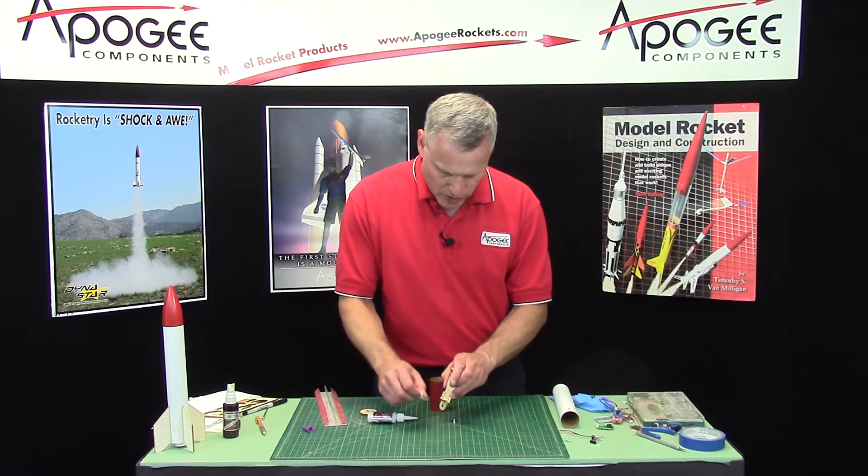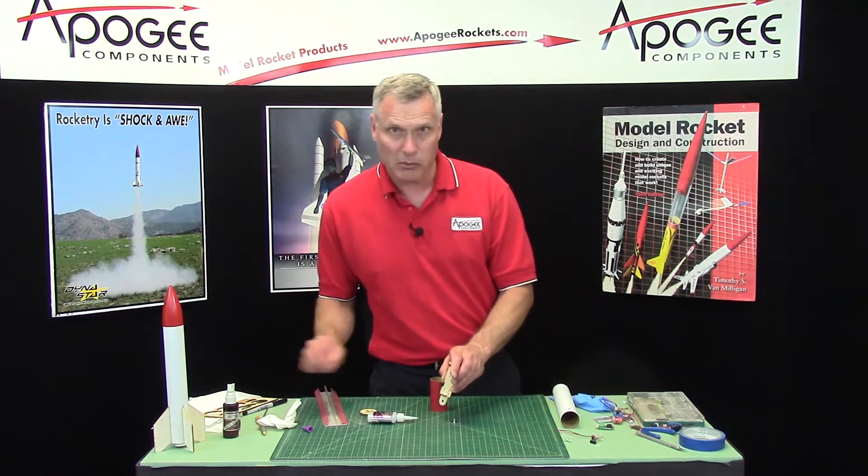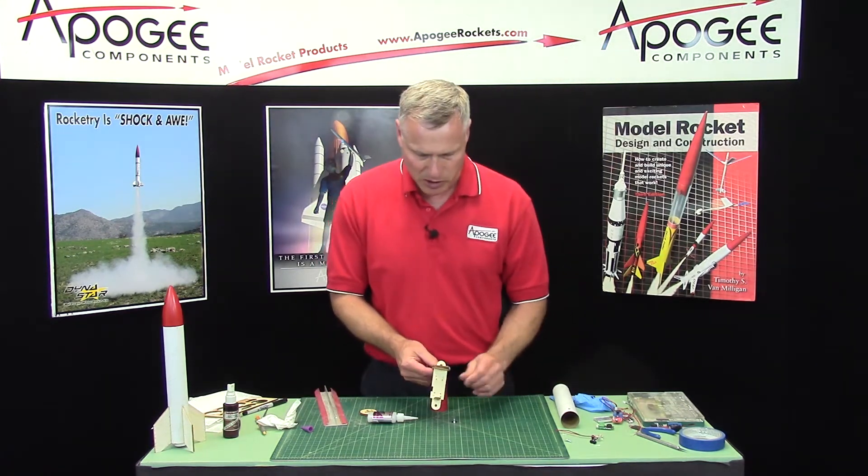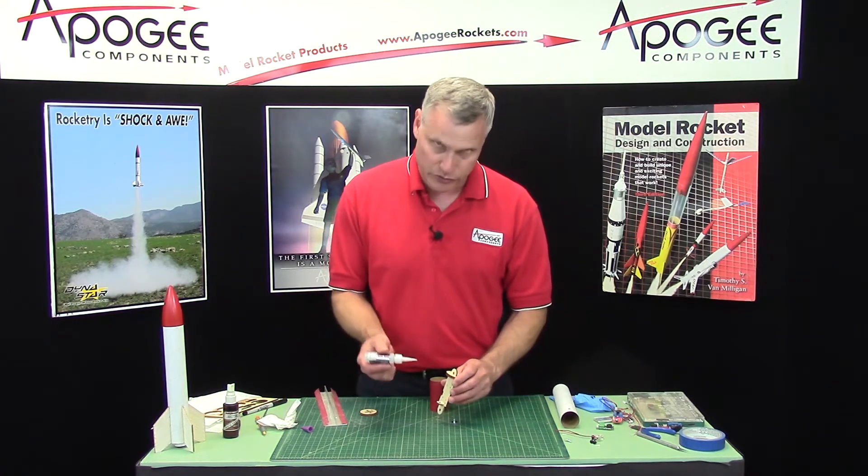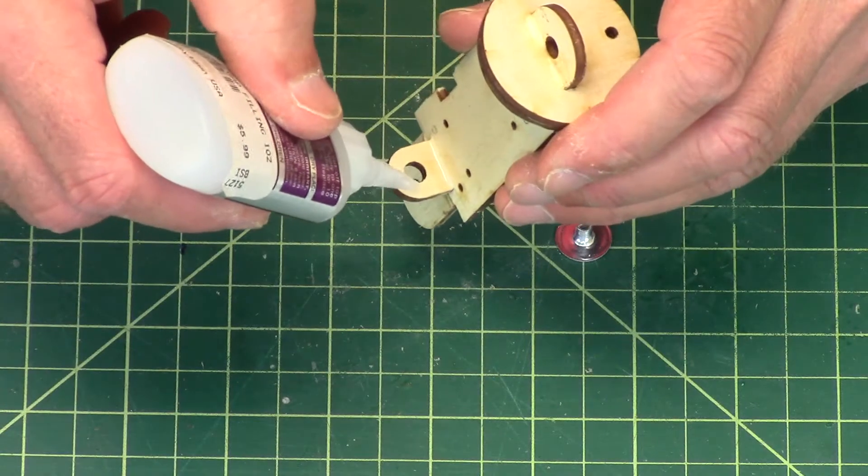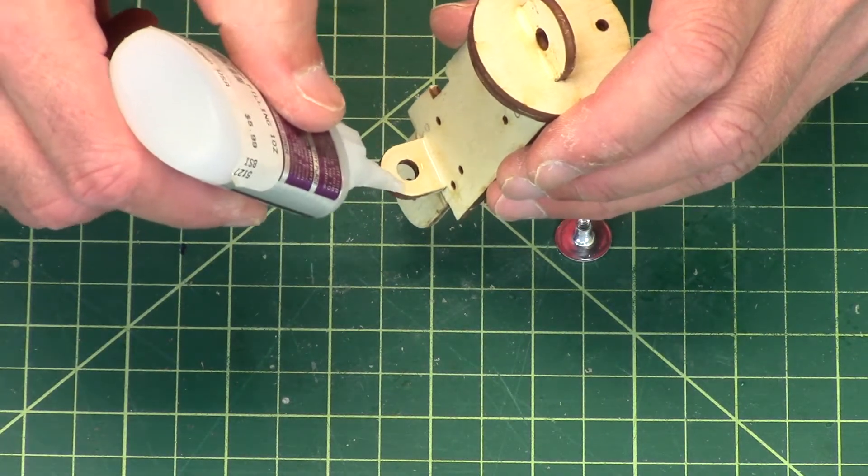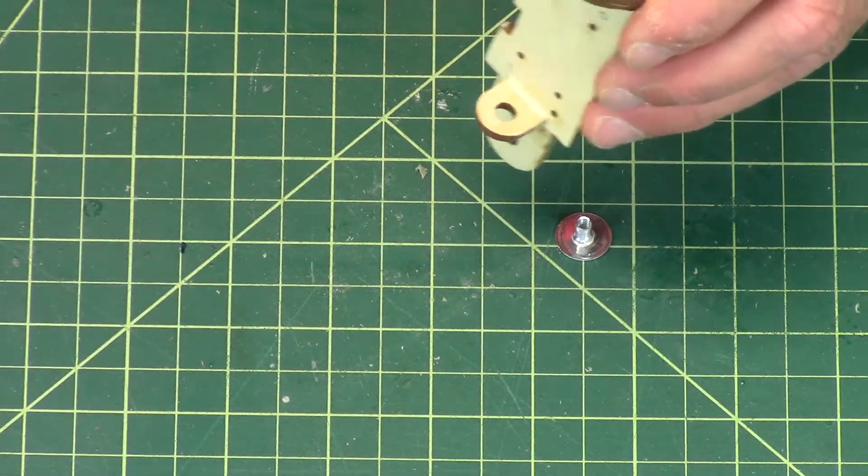I really should wait for the wood glue to dry. But I'm in a hurry, just like you probably will be. Putting the super glue on top of the wood glue kind of destroys the strength of the super glue. So if there's any glue on there, at least wipe it off.